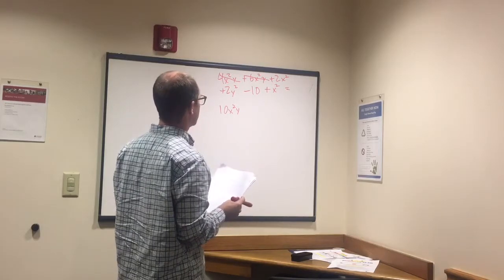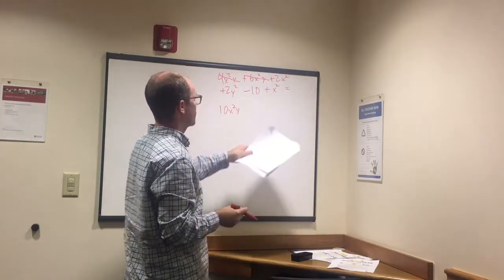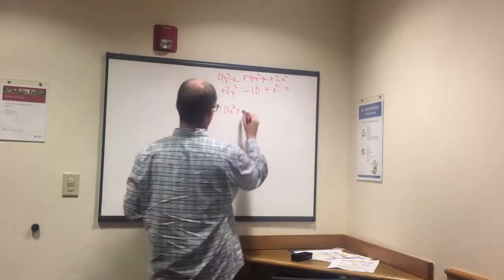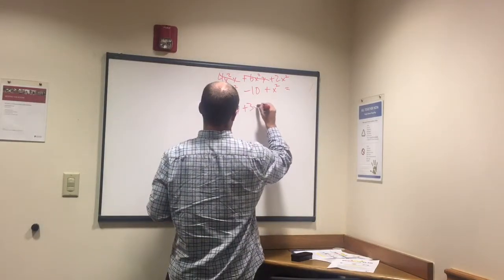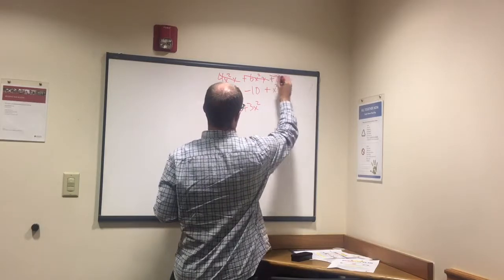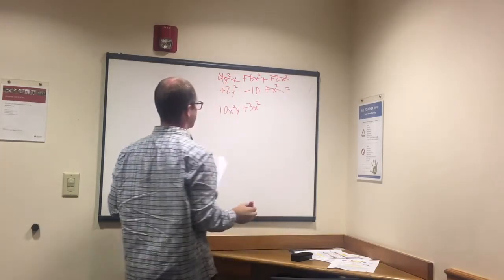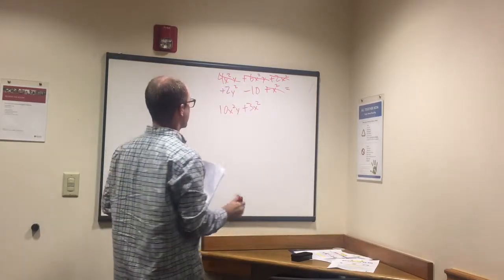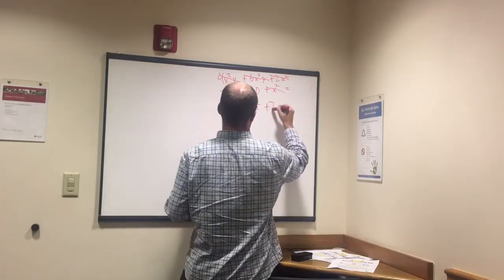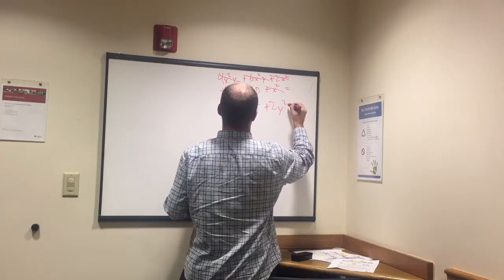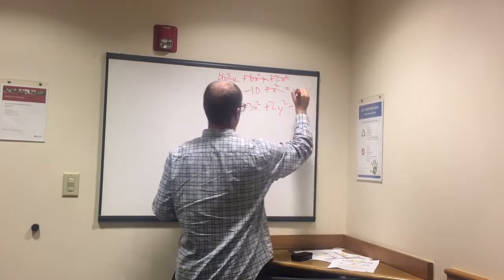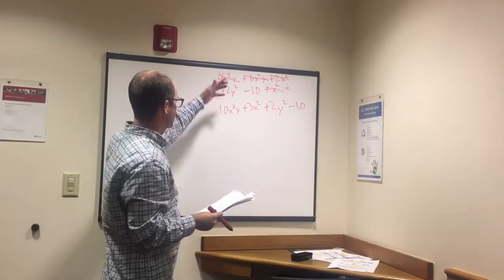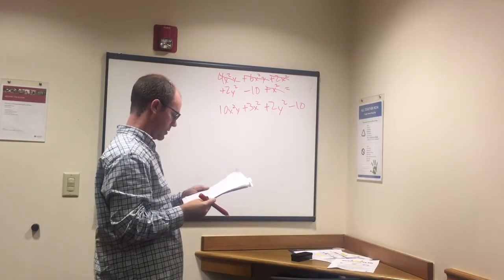What else do we have? We have 2x squared, we have any more x squared? We've got one right here, so that means we got 3x squared. We have 2y squared minus 10, we're just going to carry that down. And there we go. It looked big and complicated, it wasn't actually all that hard.